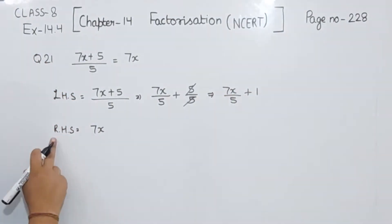Now clearly we can see that the right hand side is equal to 7x. That means the left hand side is not equal to the right hand side.